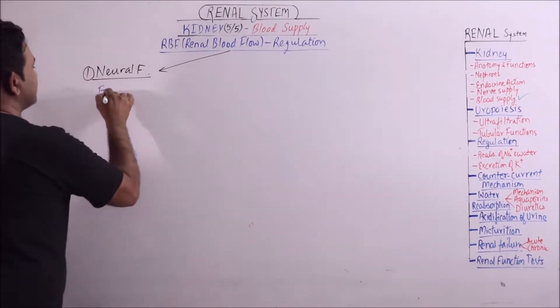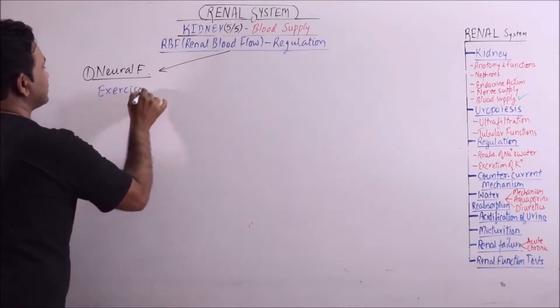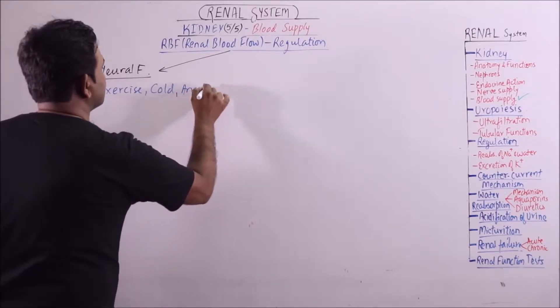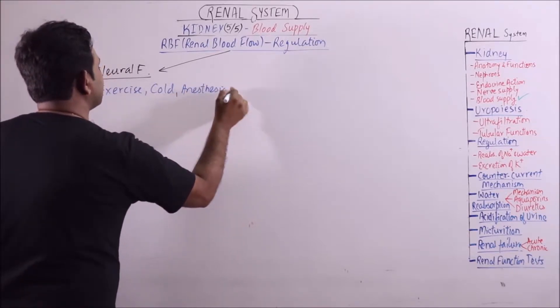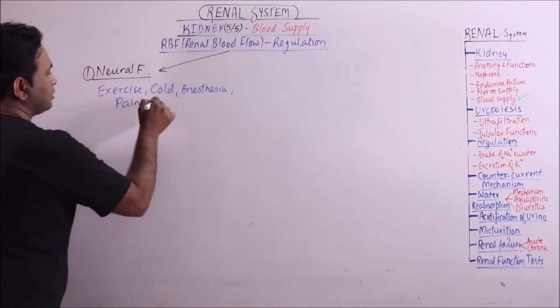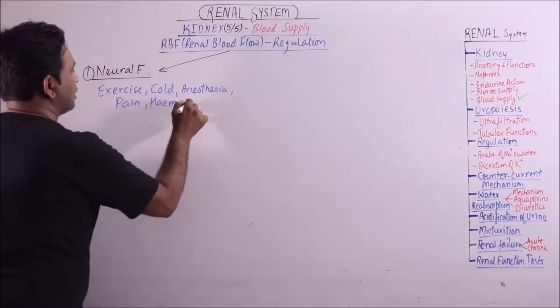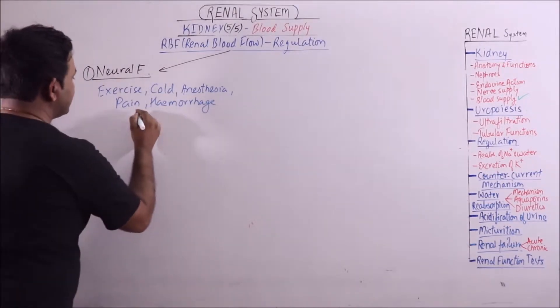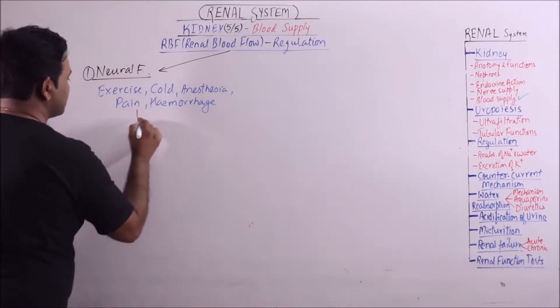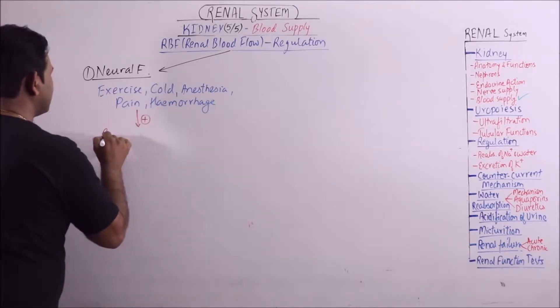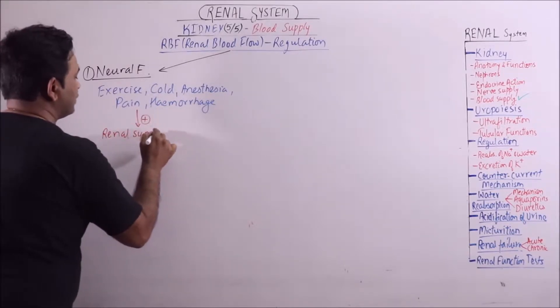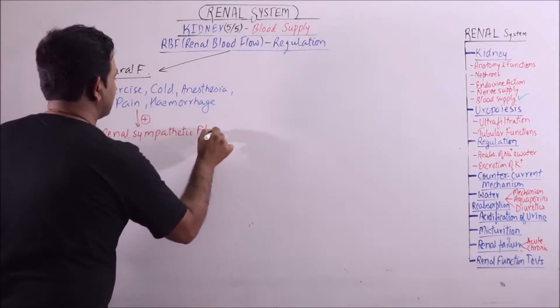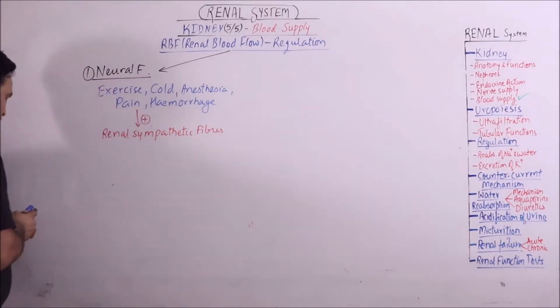Conditions like exercise, cold, anesthesia, pain and hemorrhage, these conditions stimulate the renal sympathetic fibers.